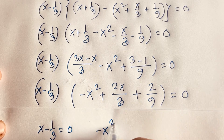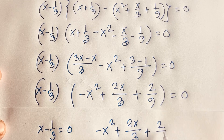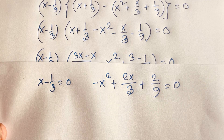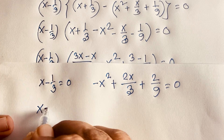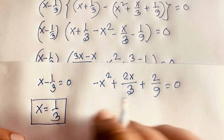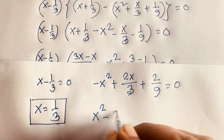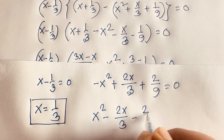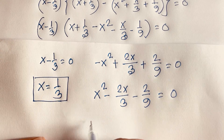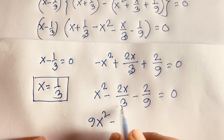For the second case, we have x squared minus 2x over 3 minus 2 over 9 equals 0 (multiplying both sides by minus 1). Multiplying both sides by 9 gives 9x squared minus 6x minus 2 equals 0. This is a quadratic equation.